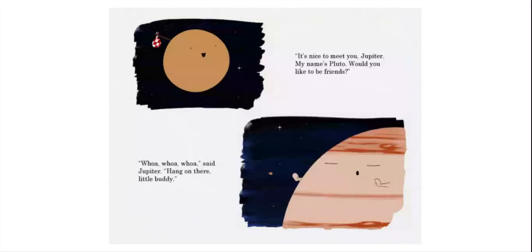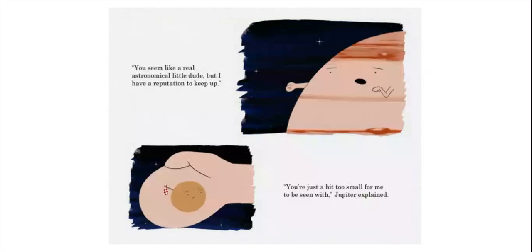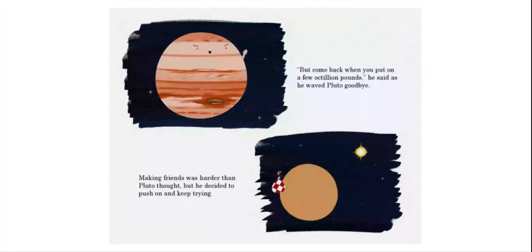Whoa, whoa, whoa, said Jupiter. Hang on there, little buddy. You seem like a real astronomical little dude, but I have a reputation to keep up. You're just a bit too small for me to be seen with, Jupiter explained. But come back when you put on a few octillion pounds, he said as he waved goodbye to Pluto. Making friends was harder than Pluto thought, but he decided to push on and keep trying.